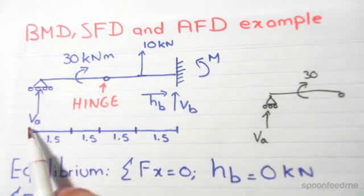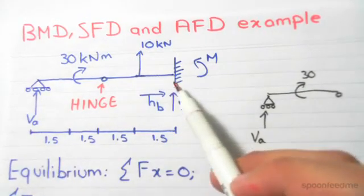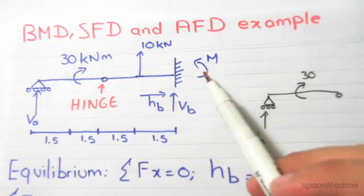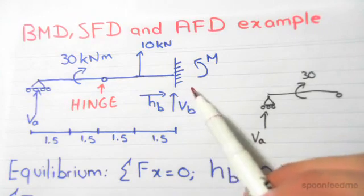On the right hand side of the structure we have a fixed support, and a fixed support has a vertical, horizontal, and rotational restraint. So we have three reaction forces here.